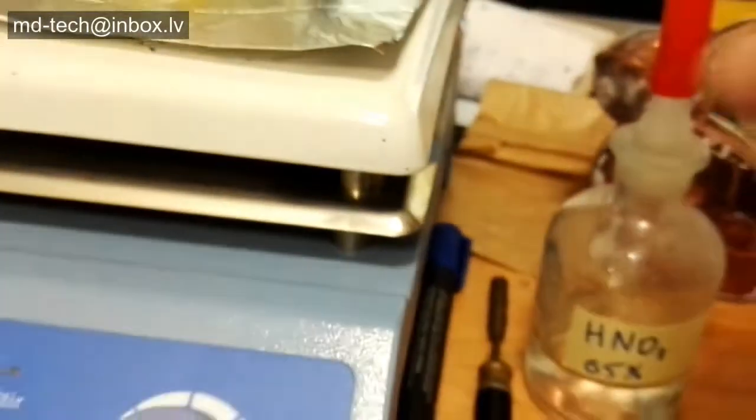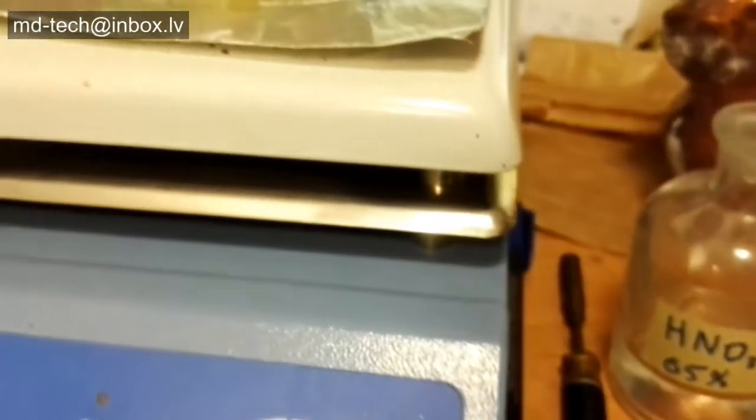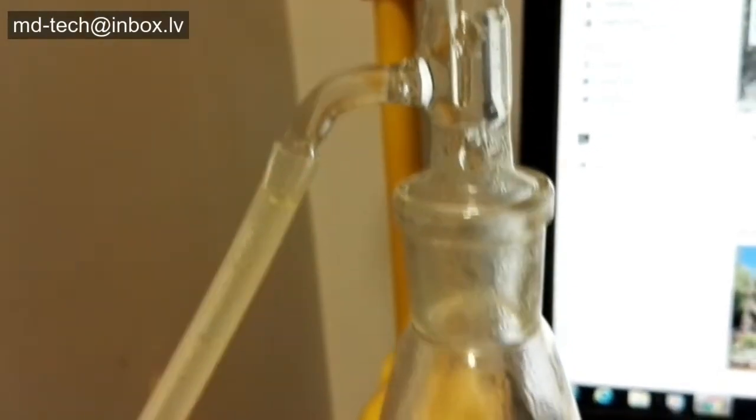Aqua regia, which is three parts hydrochloric acid and one part nitric acid, has the ability to dissolve gold, platinum, palladium, and other base and precious metals, and put them into a solution of aqua regia.